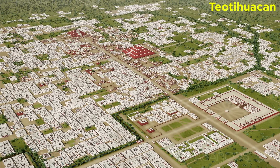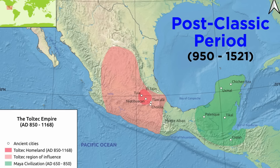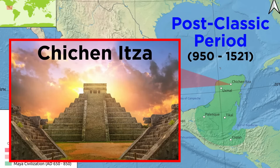Teotihuacan was abandoned by 600, leading to a period of instability in the Classic period. The Post-Classic period of 950 to 1521 marked the return of large civilizations to central Mexico, namely the Toltec civilization. The Maya region continued to be home to complex city-states, such as the famous Chichen Itza.